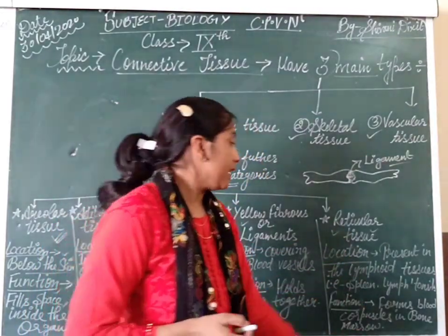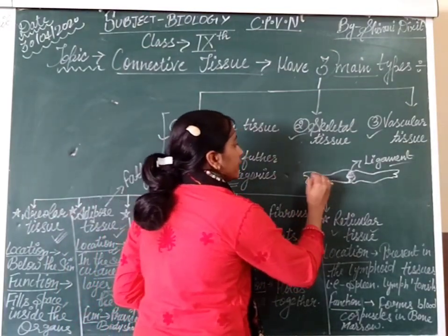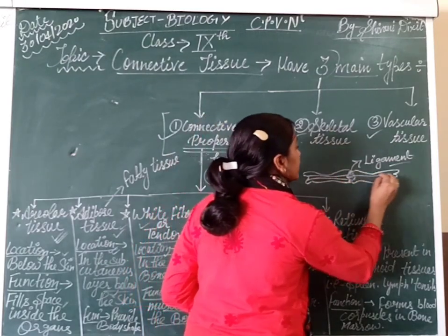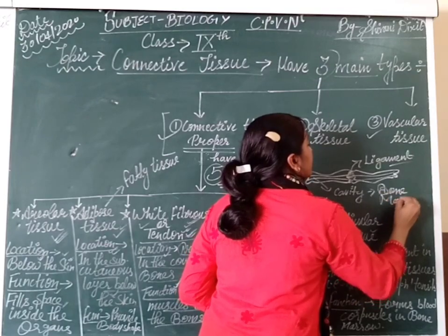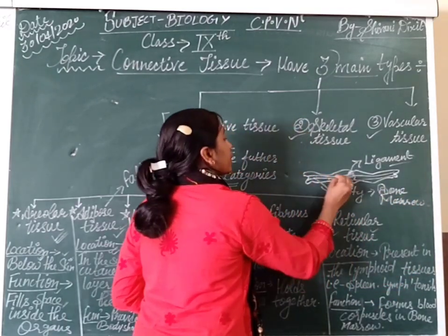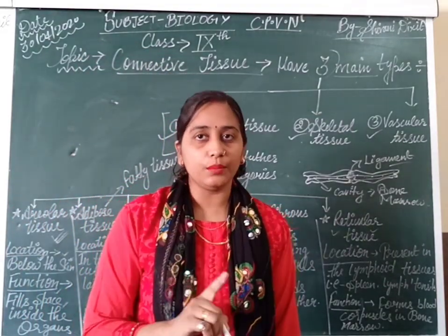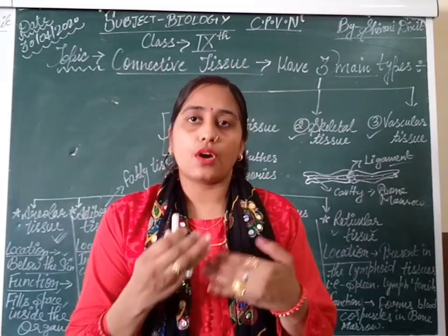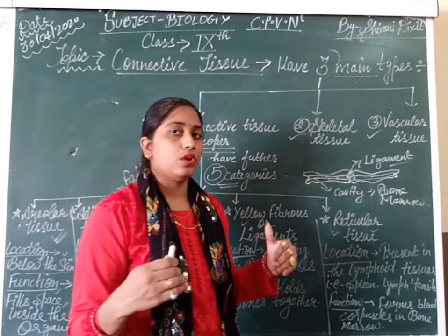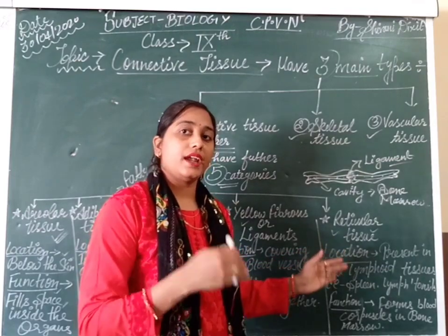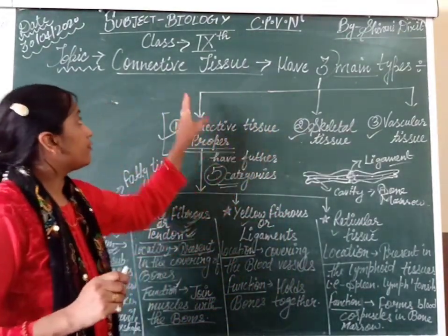The main function of reticular tissue is that it forms red blood corpuscles in the bone marrow. Bone marrow is the hollow cavity inside a bone. It is the site of blood production, where a process called hemopoiesis takes place — the production of blood cells like RBCs, WBCs, and platelets. So the bone marrow produces new blood cells, while dead blood cells are stored in the lymphatic tissue called the spleen.